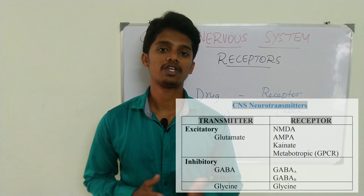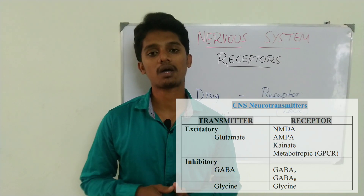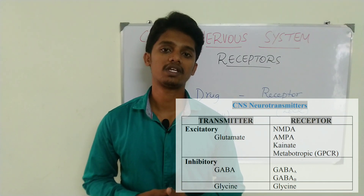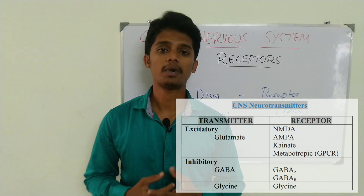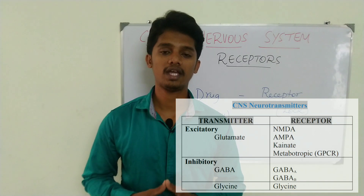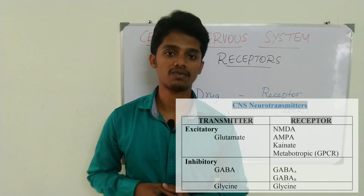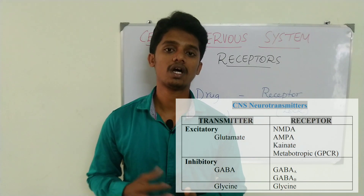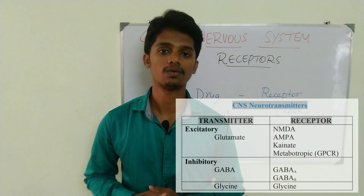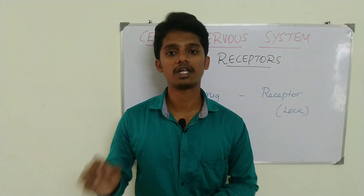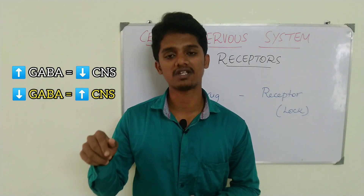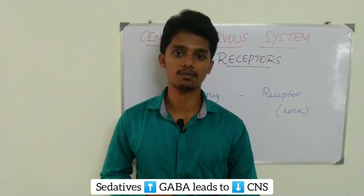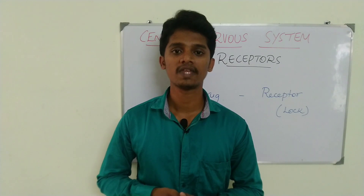Next, Inhibitory Neurotransmitters cause CNS inhibition. For example, GABA and Glycine. GABA means Gamma-Amino Butyric Acid. There are two types of GABA receptors: GABA-A and GABA-B. When GABA action increases, the CNS is depressed. When GABA action decreases, the CNS activity increases. This is the basis for understanding drugs like anesthetics, sedatives, and depressants.